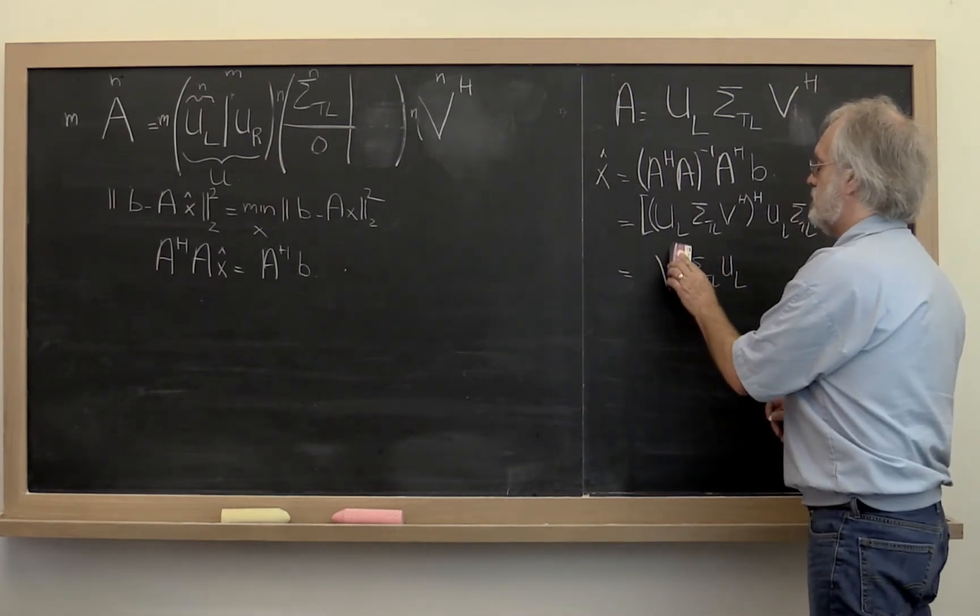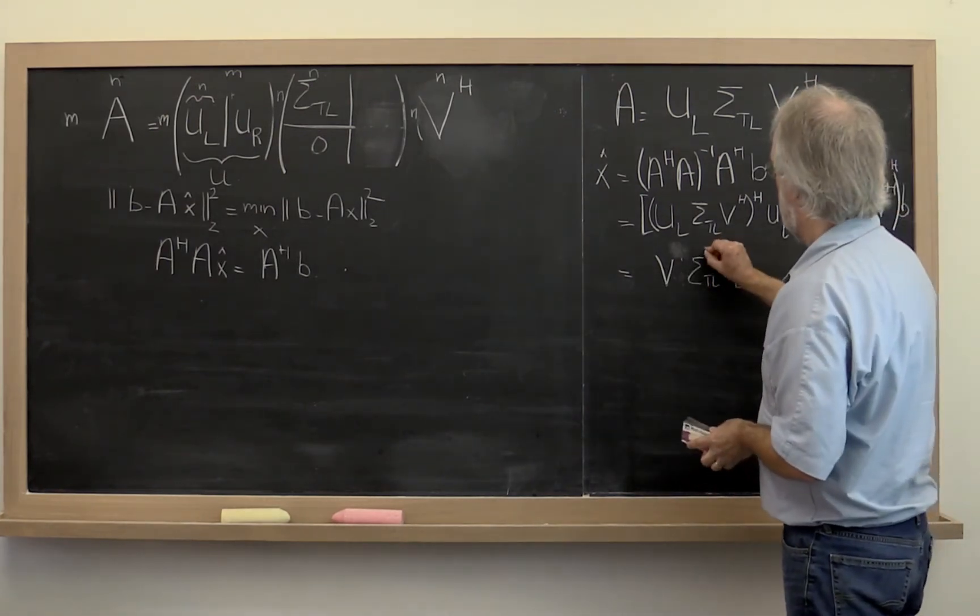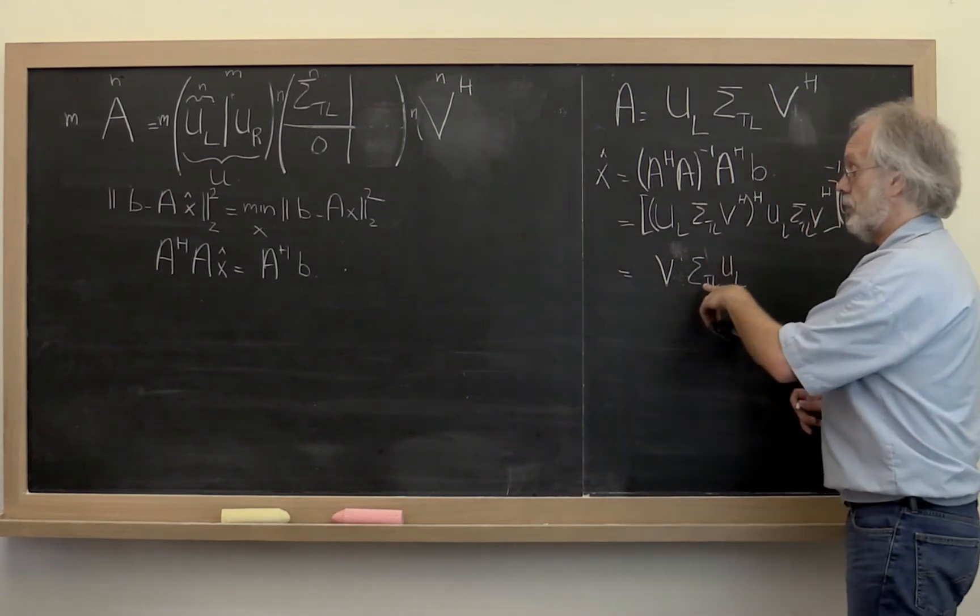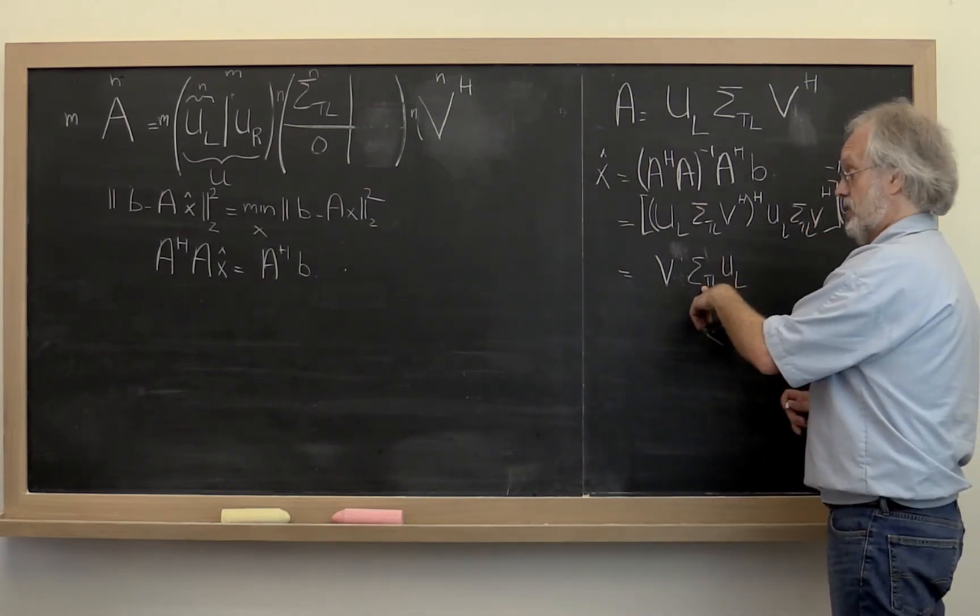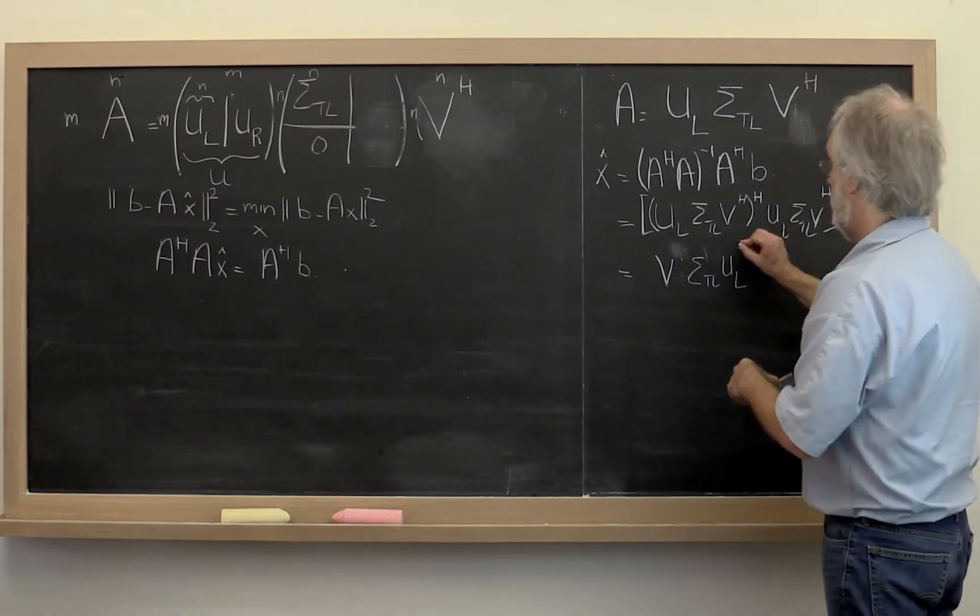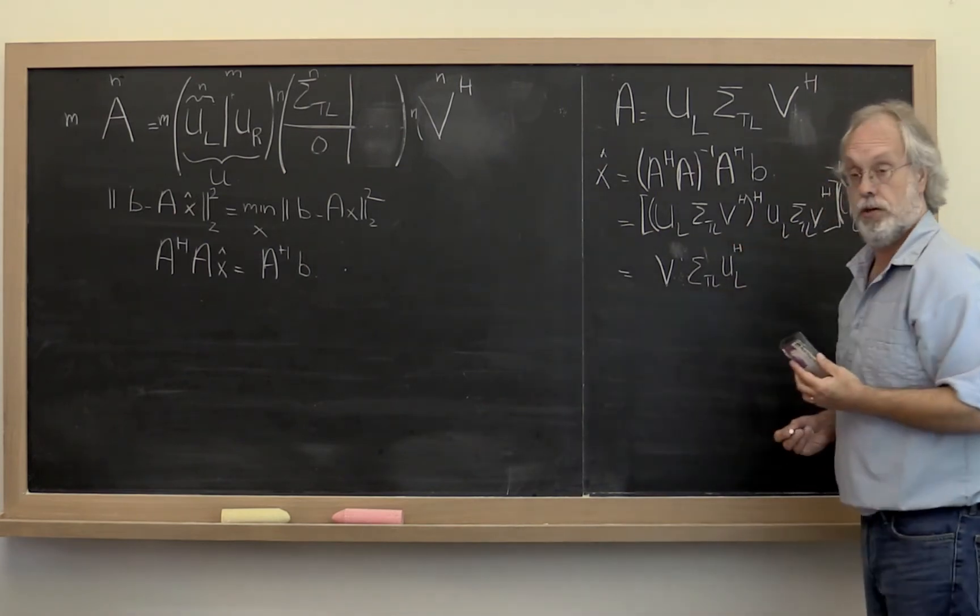Taking the Hermitian transpose of this just wipes that out. Taking the Hermitian transpose of a real valued diagonal matrix leaves it alone. And then we need to take the Hermitian transpose of that.